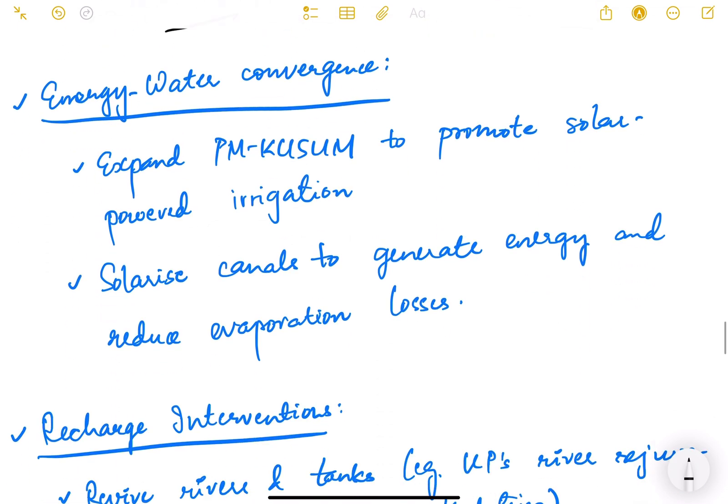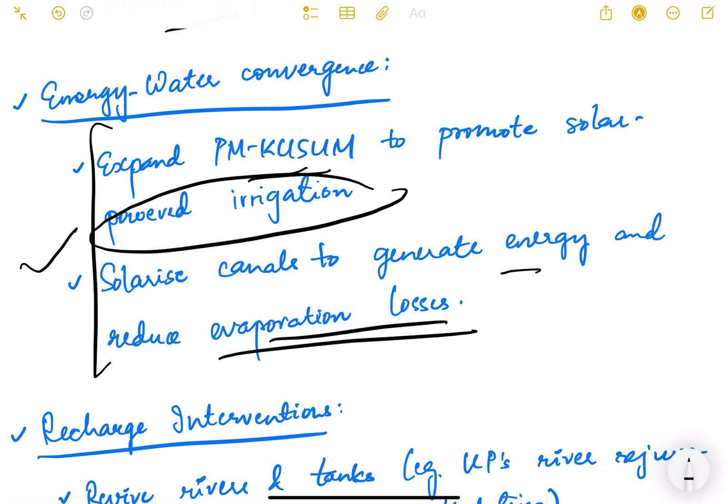Then energy water convergence. Expand PM Kusum to promote solar powered irrigation, solarize canals to generate energy and reduce the operation losses. Again use of solar energy and renewable energy which can be further encouraged and promoted in our country. There are various challenges but this is a potential solution and going ahead in future these solutions will become necessity actually.